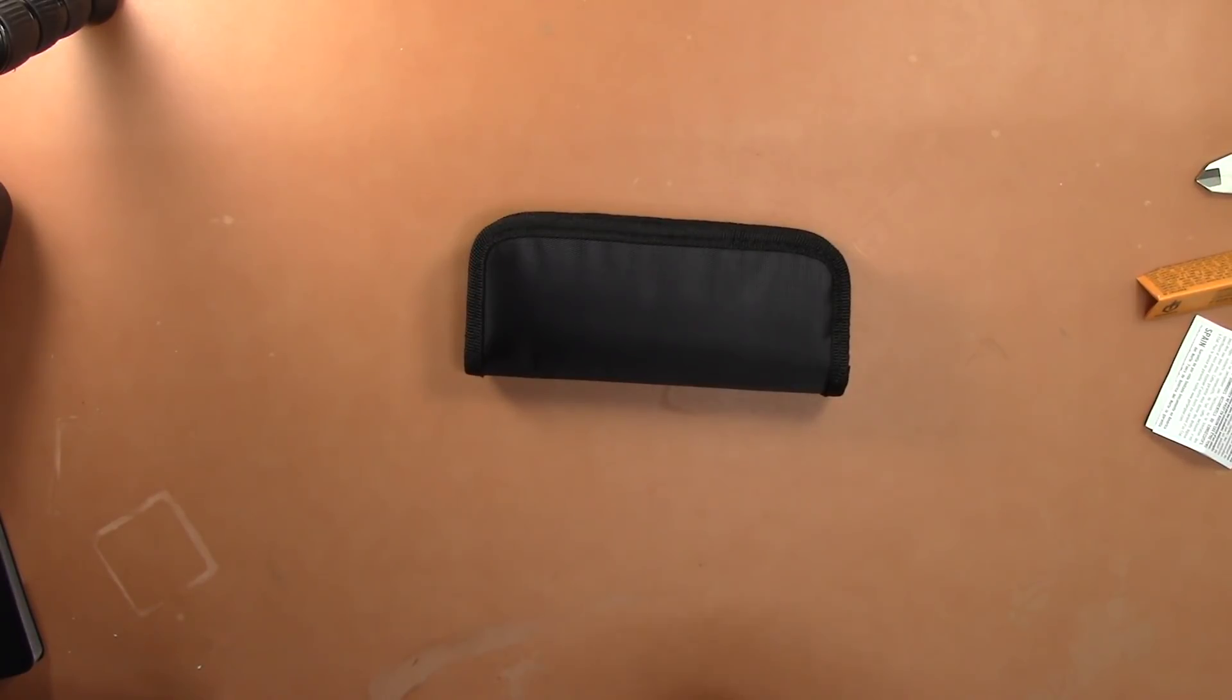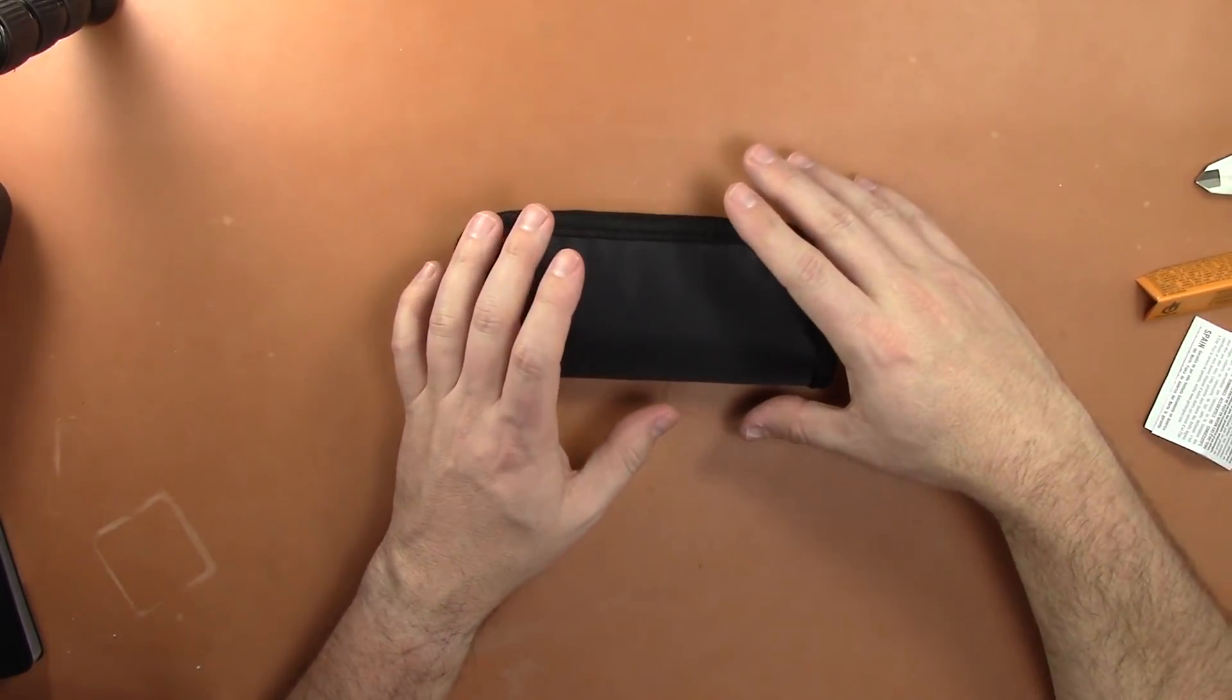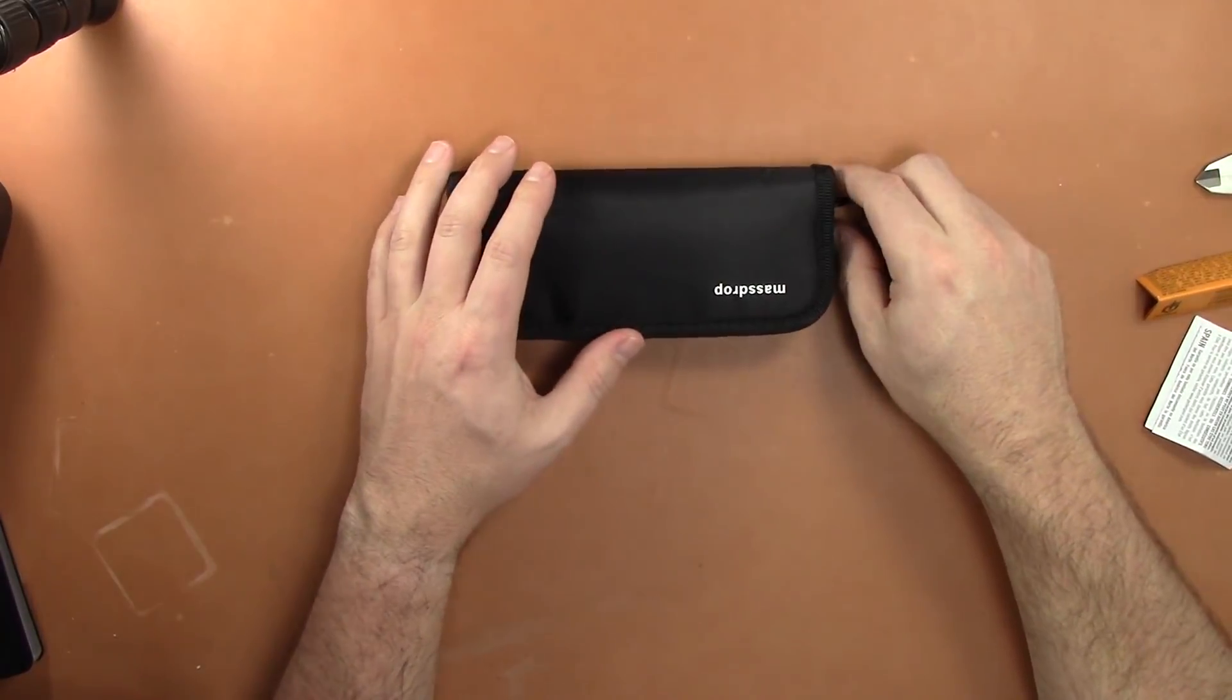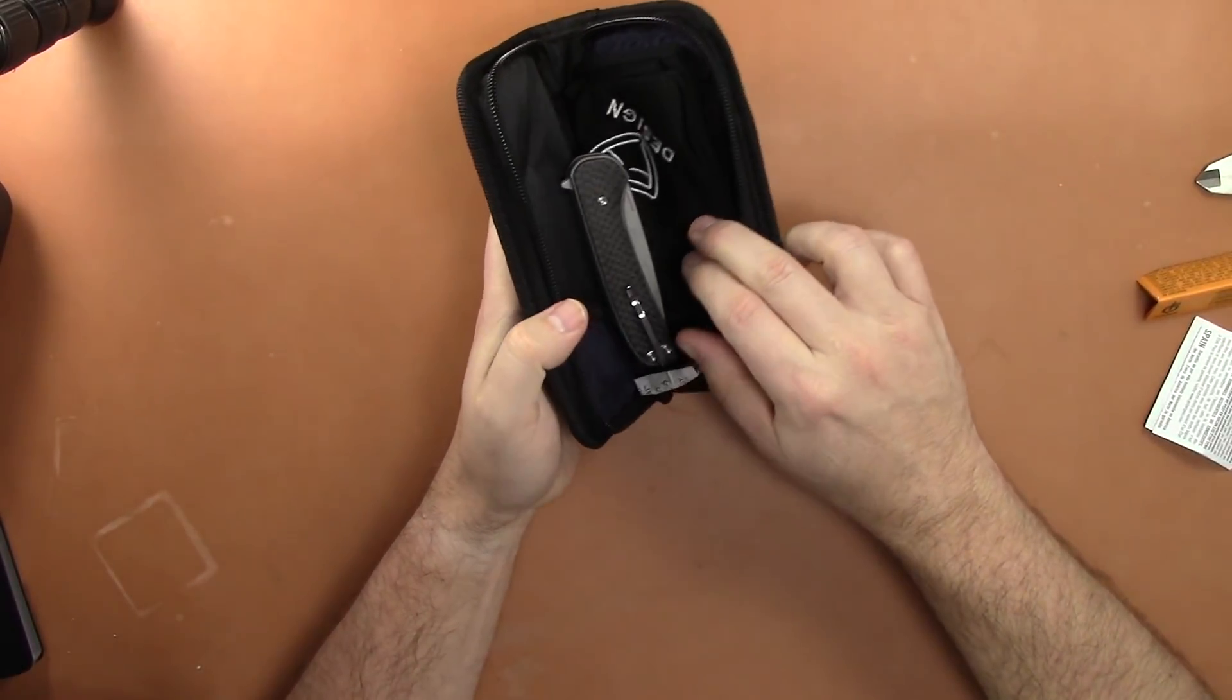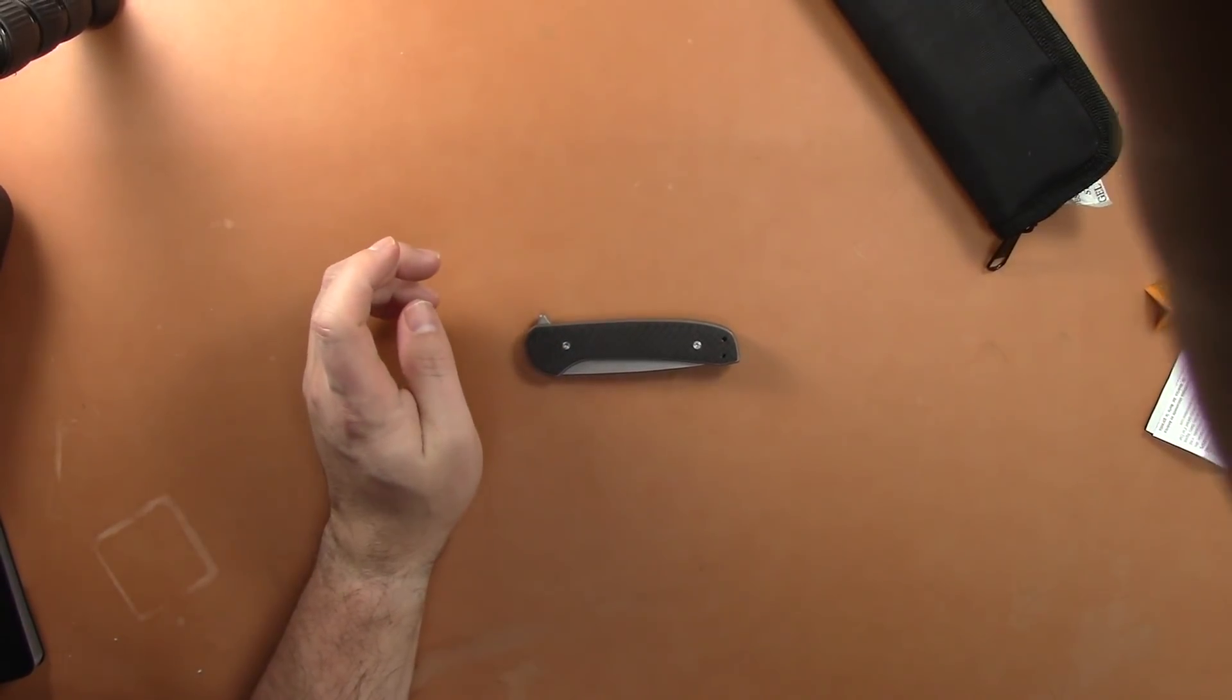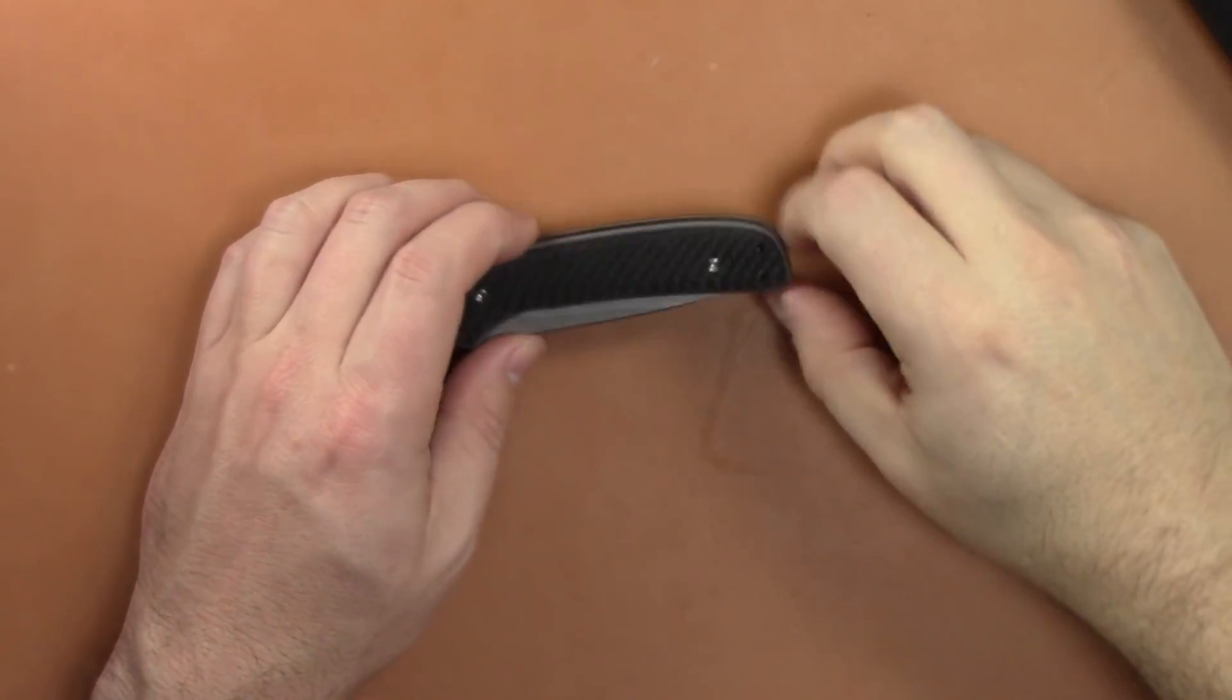Another knife could have come out and bested it, but it never did. This, my ladies and gentlemen, is the Massdrop Ferrum Forge Gent. Now this one is a little different - this is the Select which is available right now in carbon fiber or rosewood handles.